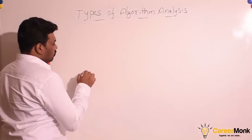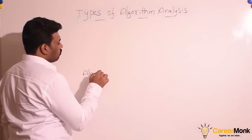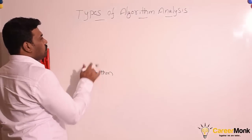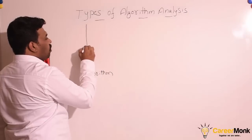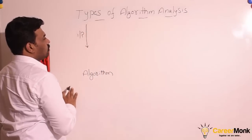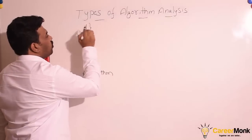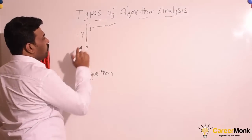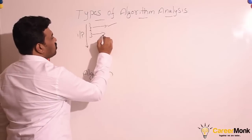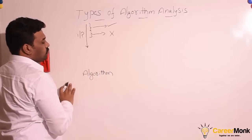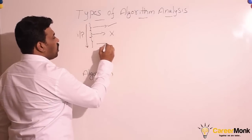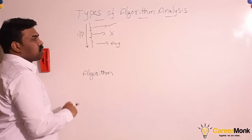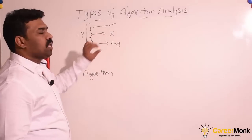Let us assume we have an algorithm to solve the given problem. To analyze this algorithm, among all possible inputs, we need to find a subset of inputs for which the algorithm behavior is good, another subset for which the algorithm behavior is not good, and another subset for which the algorithm behavior is average. But the next question is, how do we define the algorithm behavior?